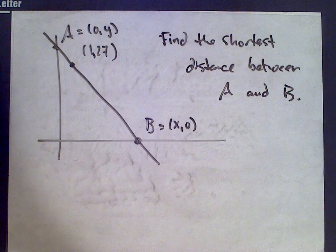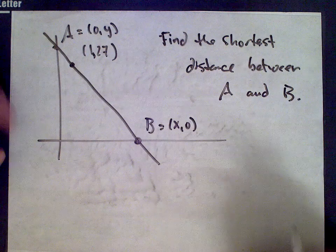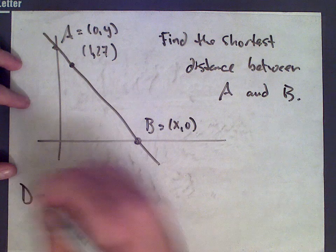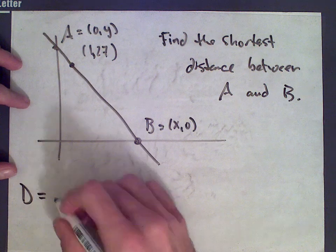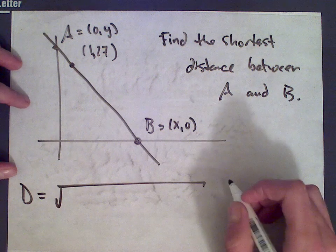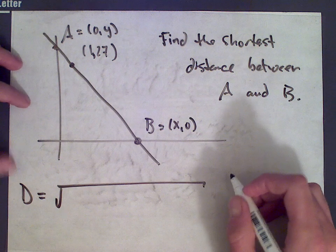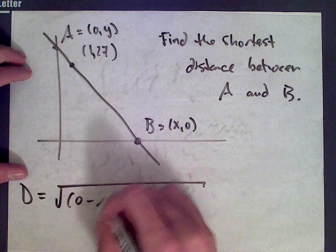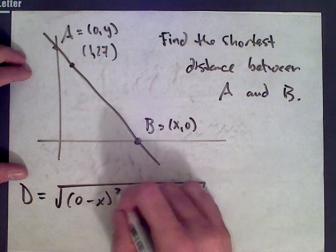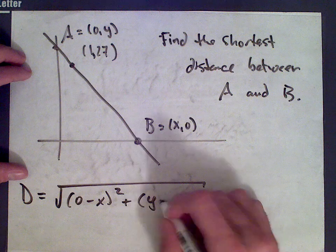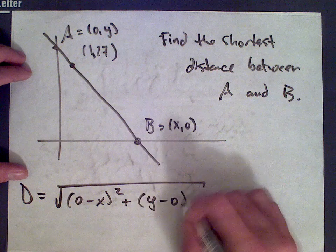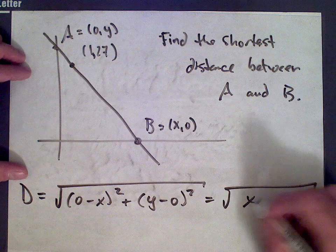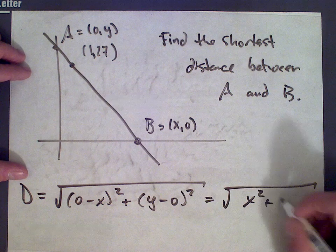Let's write the equation of the thing we're trying to minimize — that's the distance between A and B. The distance is the square root of (0 minus x) squared plus (y minus 0) squared, using the distance formula, which simplifies to the square root of x squared plus y squared.